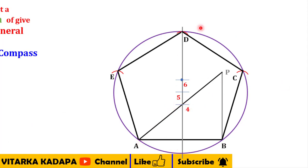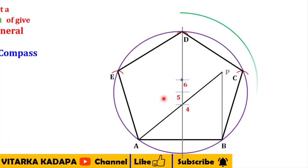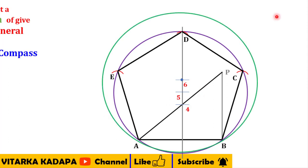From point 4 to A, drawing a circle gives a square; from 5 to A gives a pentagon. Now I will take the radius from 6 to A and draw a circle. With the radius as 6 to A, I draw a circle like this, and the remaining procedure will be common.